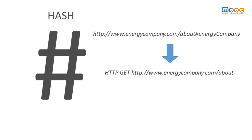As a result of this, the resource cannot be accessed individually, because we have to retrieve the whole document. On the other hand, hash URIs allow us to create identifiers for non-document resources, such as persons or organizations.